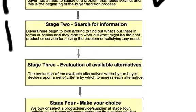Stage two is where we begin to search for information about the product or service. Buyers here begin to look around to find out what's out there in terms of choice, and they start to work out what might be the best product or service for solving the problem or satisfying the need.